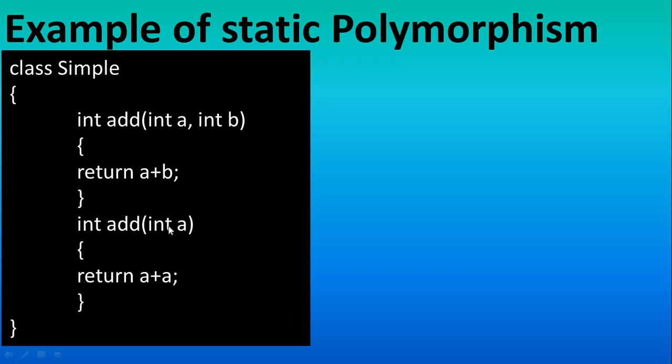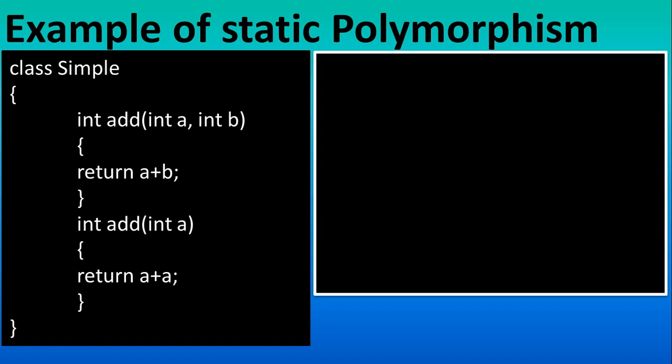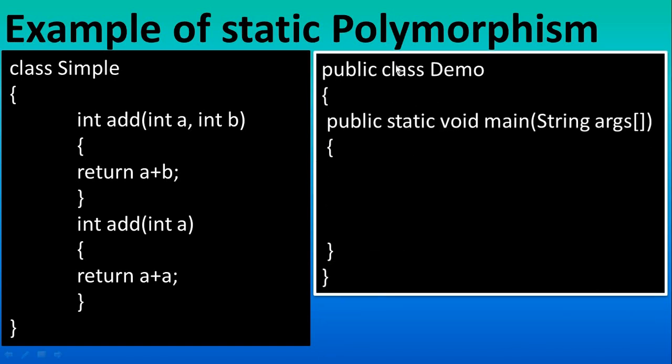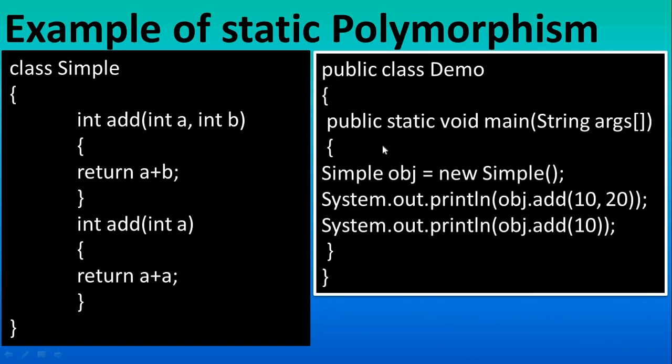Here we have two parameters, here one. That's the concept of overloading, which we discussed in previous tutorial also. For execution of this you take one class with the main method and take one object, and by using that object you can run this method.